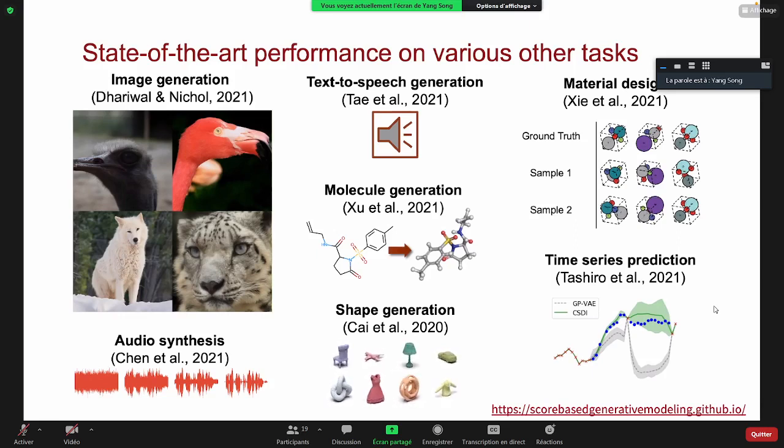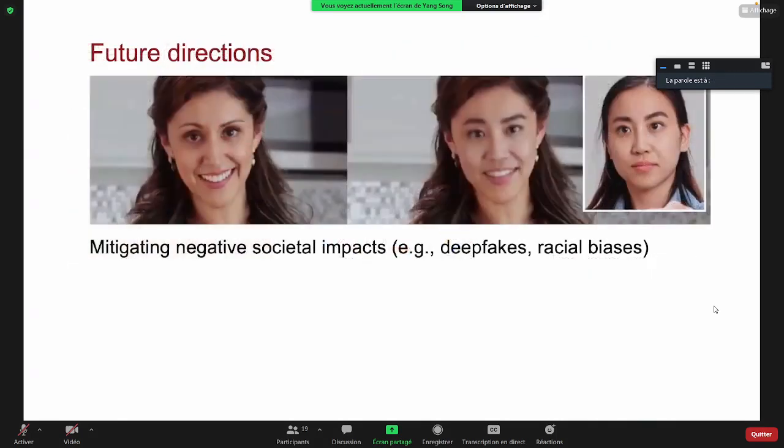For some future directions, you've already seen how we can generate very realistic images. This also means if in the hands of malicious people, they might be able to generate some deepfakes and do some harmful things. So we want to mitigate those potential negative societal impacts and produce methods that can detect those deepfakes, or we want to address the potential issues.